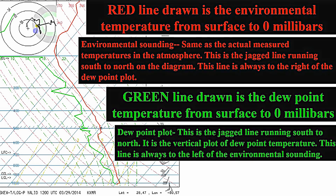Let's look at the green line. The green line is the dew point temperature. We will find this always to the left of the red line. This line also runs from south to north, beginning at the surface and decreasing as we move up the atmosphere.